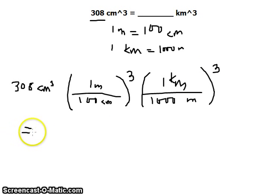So 308 cubic centimeters, let's first do the cube of this one so that it will be easy. One cubed is just one, and the unit would also be cubed. 100 cubed and the centimeter would also be cubed.